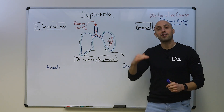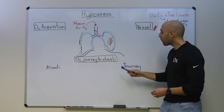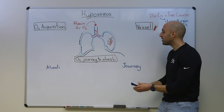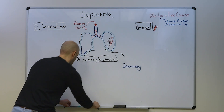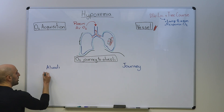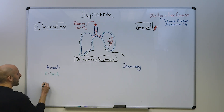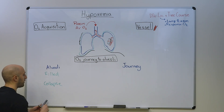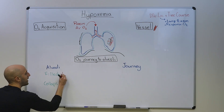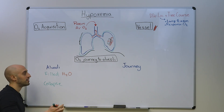Because we like to prioritize the frequency and base rate of disease, we're first going to talk about pathology in this bucket — what can happen at the level of the alveoli that leads to true hypoxemia. Well, it can be filled with a substance or it can collapse. What kind of substances can fill the alveoli? H2O — this can result in cardiogenic pulmonary edema or non-cardiogenic pulmonary edema, like acute respiratory distress syndrome.